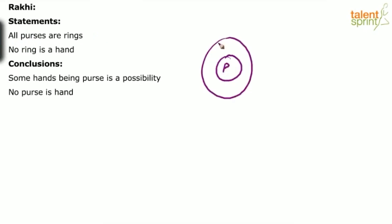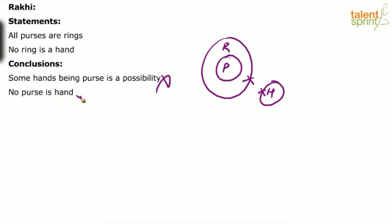New problem. All purses are rings. No ring is a hand. Conclusion one: some hands being purses is a possibility. No — not possible at all, because hands cannot touch rings, and if hands cannot touch rings, how will they touch purses? So hands being purses is not possible. Conclusion two: no purse is a hand. This is correct, because purses cannot touch hands — purses cannot come out of rings. So no purse is a hand is the correct conclusion.